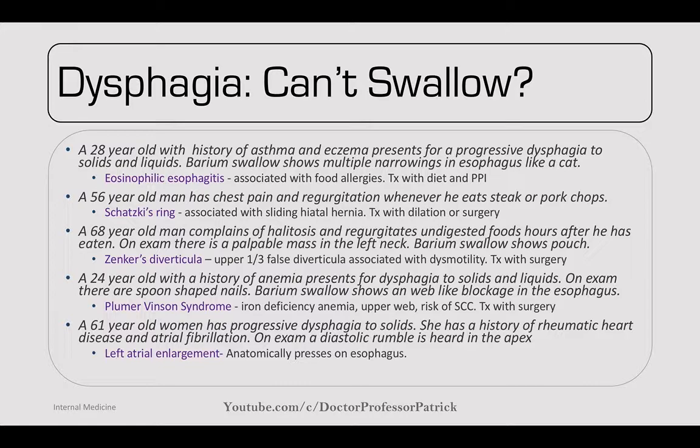A 24-year-old with a history of anemia presents with dysphagia to solids and liquids. On exam there are spoon-shaped nails, and barium swallow shows a web-like blockage in the esophagus. This is classic Plummer-Vinson syndrome — look for the triad of iron deficiency anemia, upper web in the throat, and risk of squamous cell carcinoma. Treat with surgery to remove the web and monitor for squamous cell carcinoma.